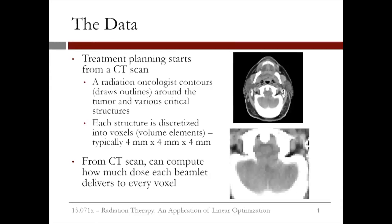In this video, we'll discuss how radiation therapy can be framed as an optimization problem. The data is collected in the treatment planning process, which starts from a CT scan, like the one you see here on the right. Using the CT scan, a radiation oncologist contours or draws outlines around the tumor and various critical structures.